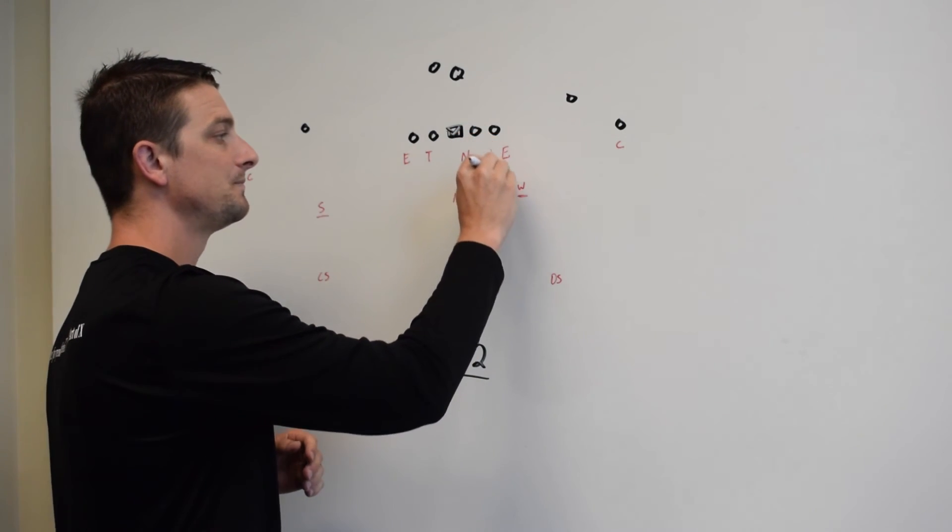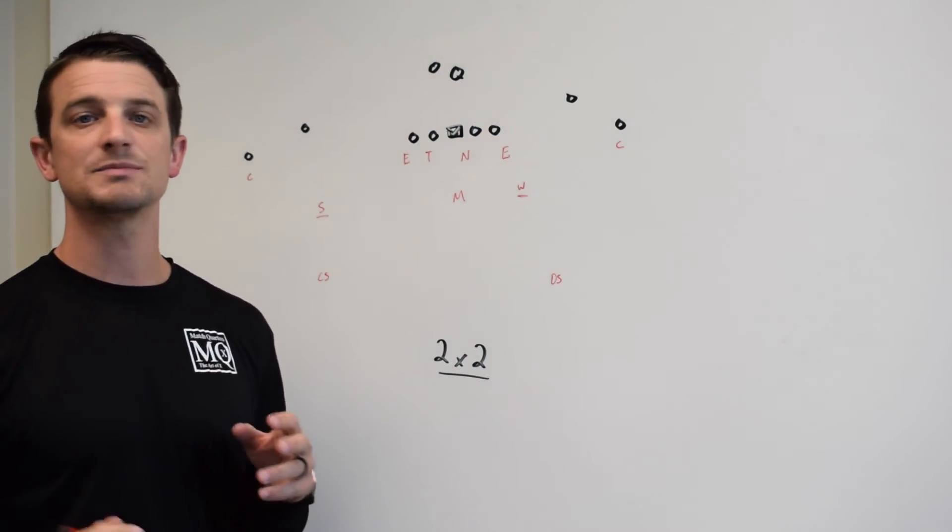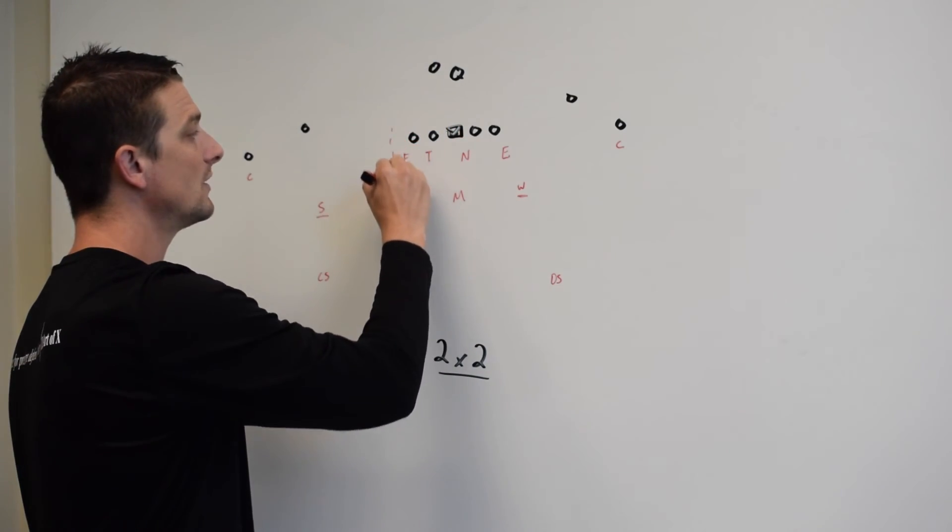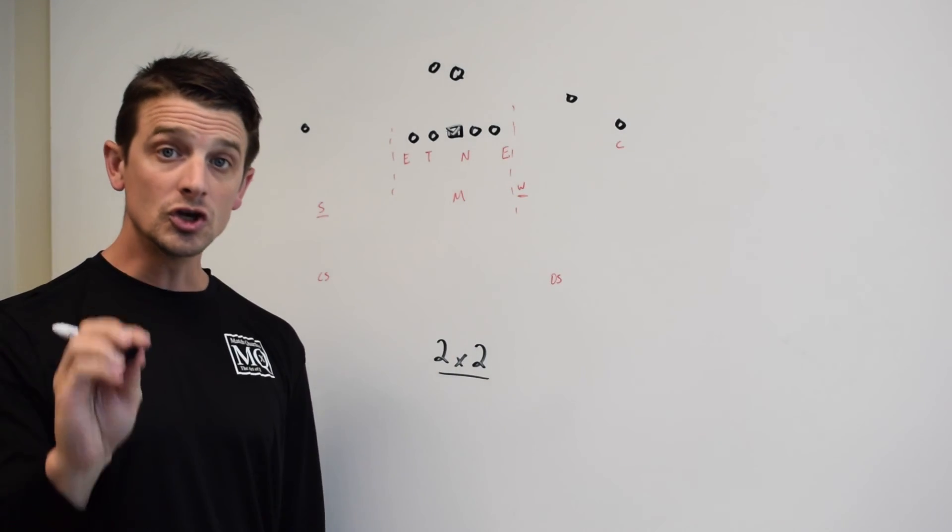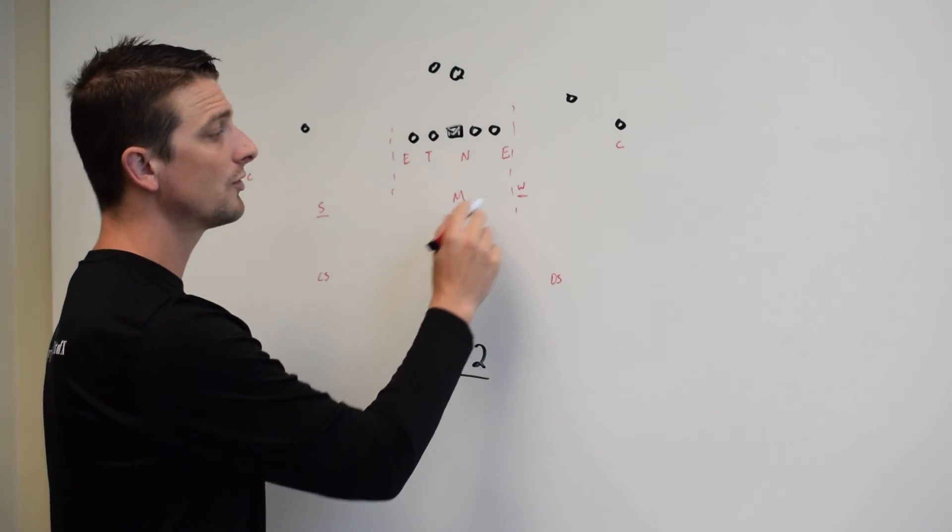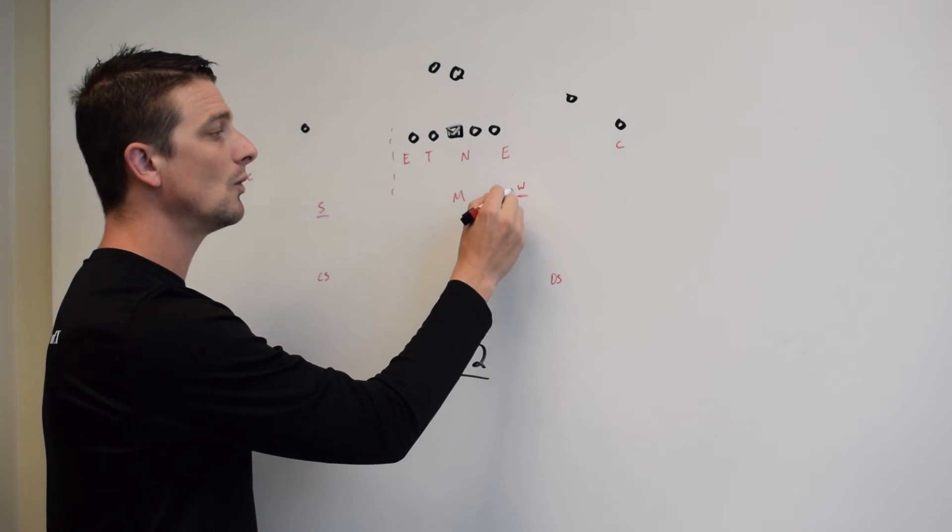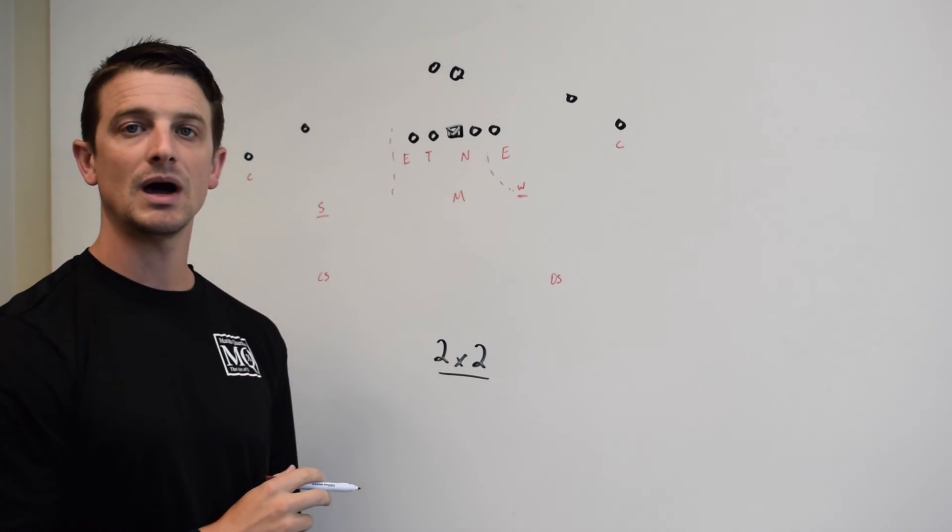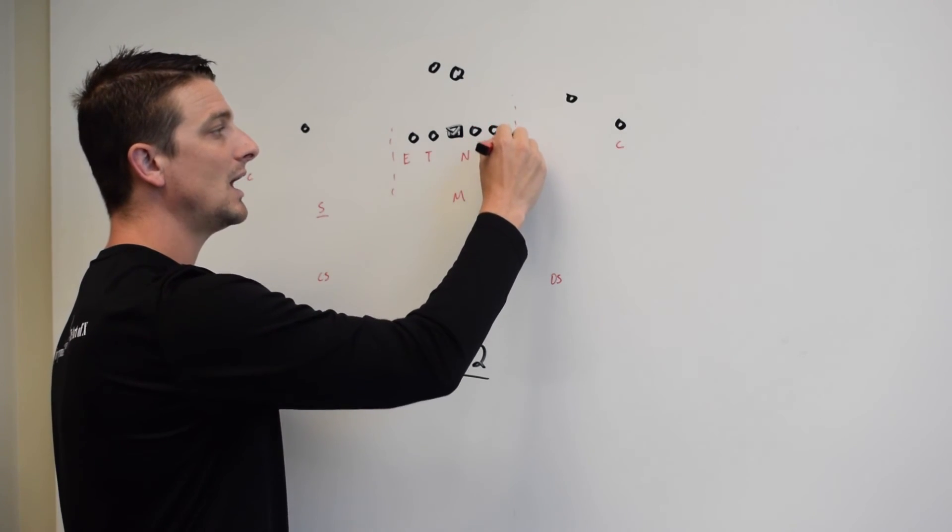Now let's talk about box players. Most offensive coordinators define a box player as somebody that is within the box. So for instance, in this, this is our box players. Now, most good offensive coordinators will throw the Will linebacker into the box as well, knowing that he is going to fold into the box. So right now, you've got a six man box. But rudimentary rules, when they are building a box, this is going to be considered a 4-1 box.